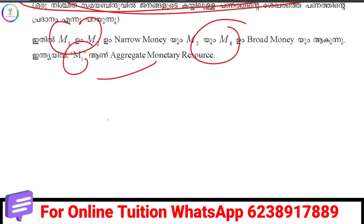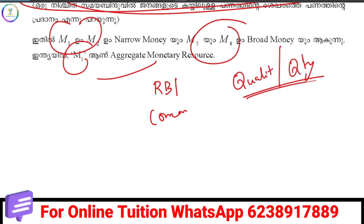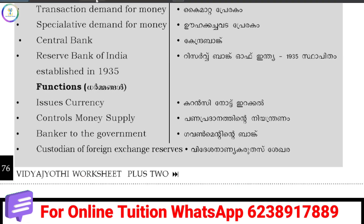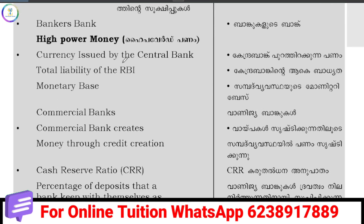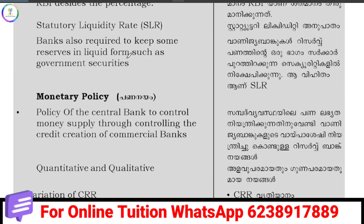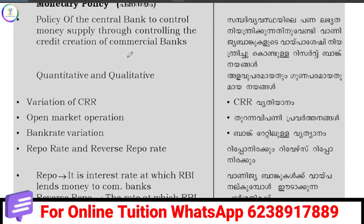Two important questions: RBI functions and commercial banks. RBI qualitative and quantitative tools — this is important. RBI functions include currency issuance, money supply control, banker to the government, foreign exchange control. Commercial banks use RBI as a tool. The CRR is a source of money supply. In the case of CRR being correct, then it is a source of money supply.